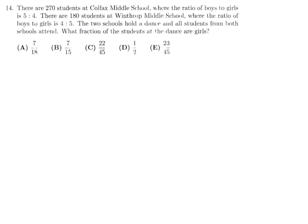Number 14: There are 270 students at Colfax Middle School with a boys-to-girls ratio of 5:4. Since 5+4=9 and 270÷9=30, there are 5×30=150 boys and 4×30=120 girls.